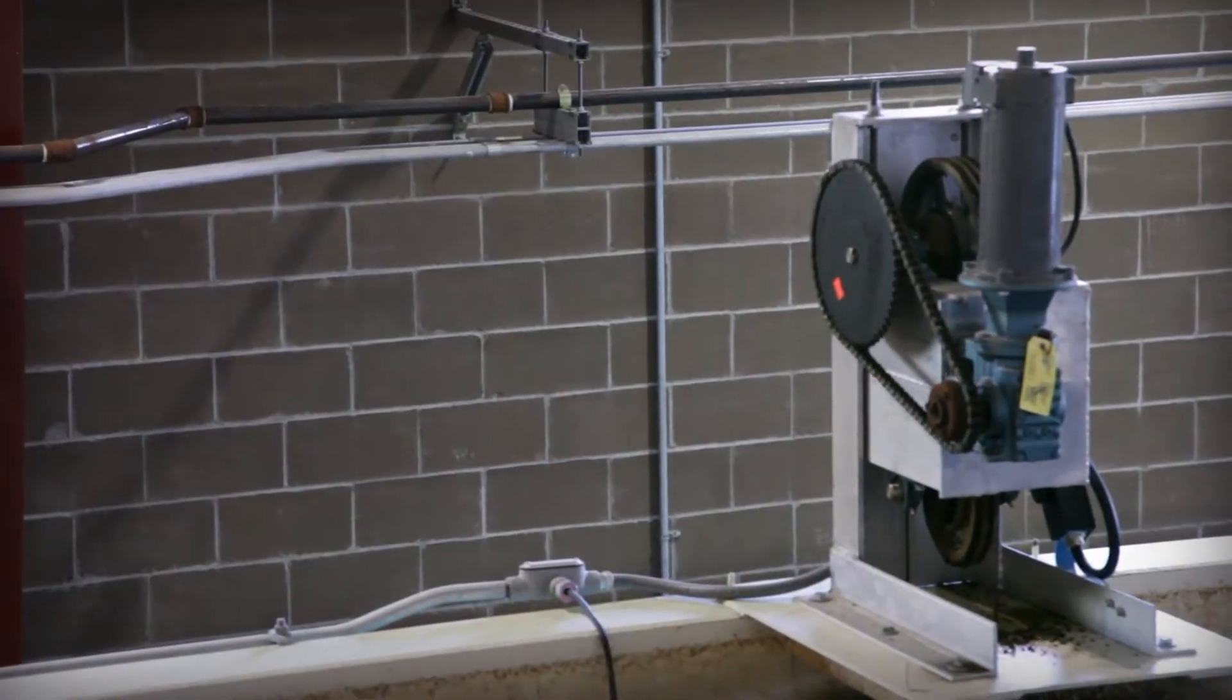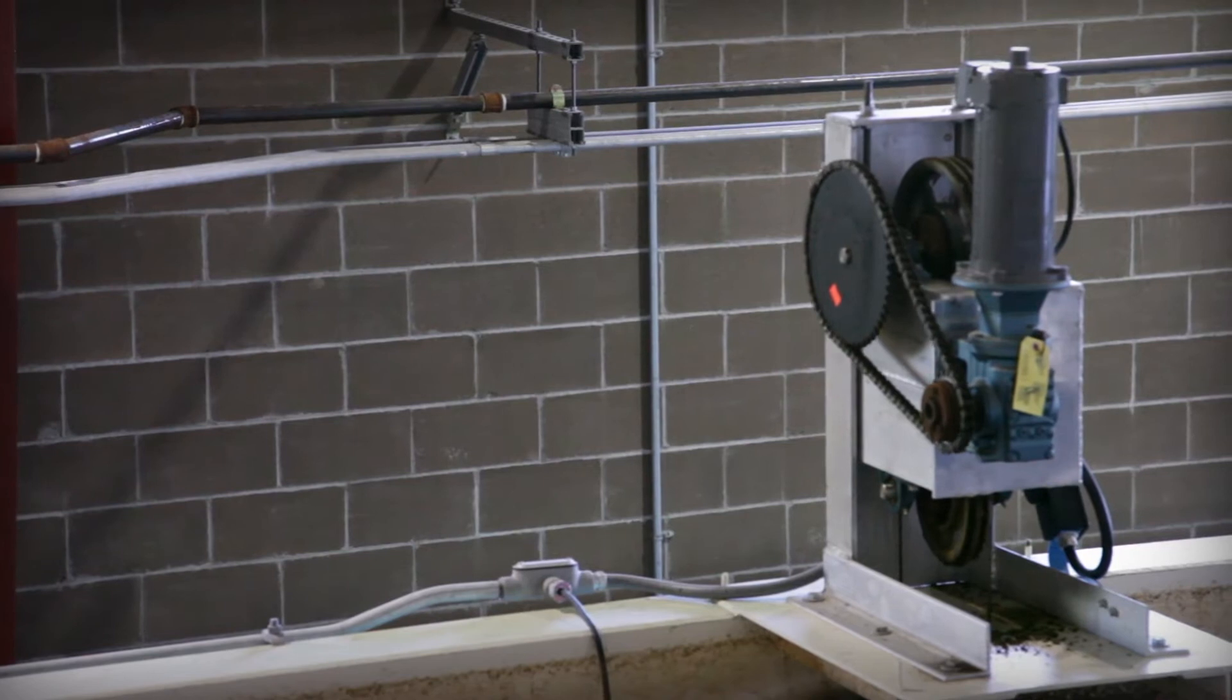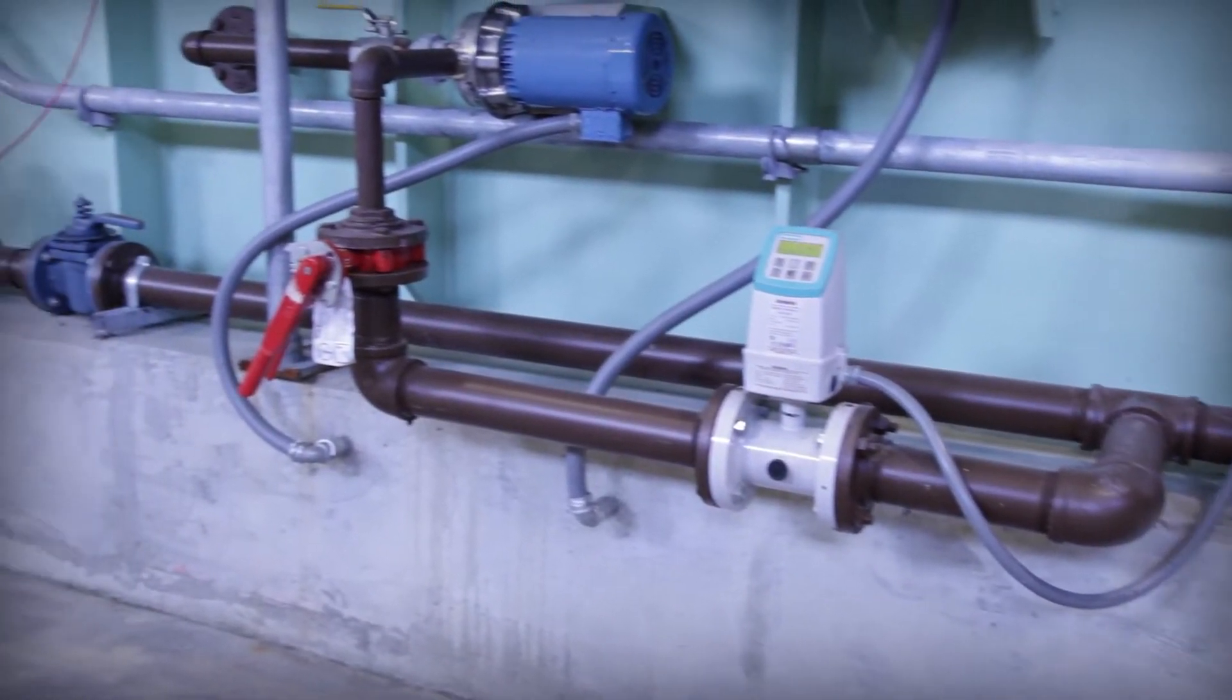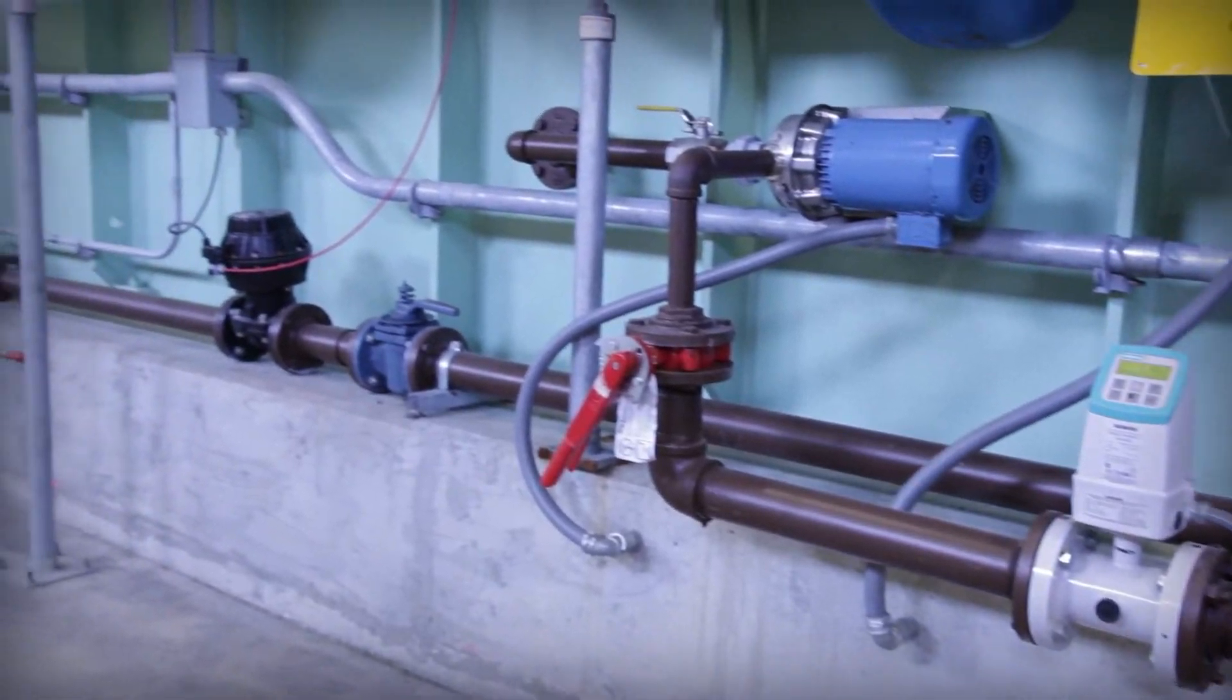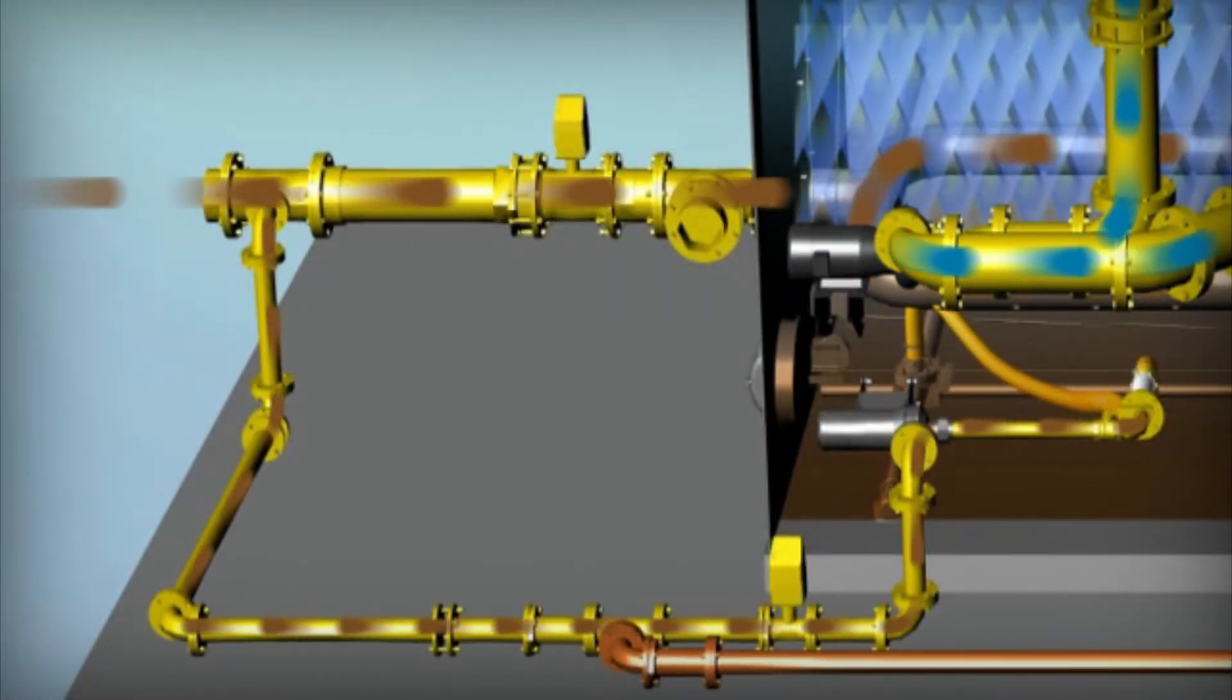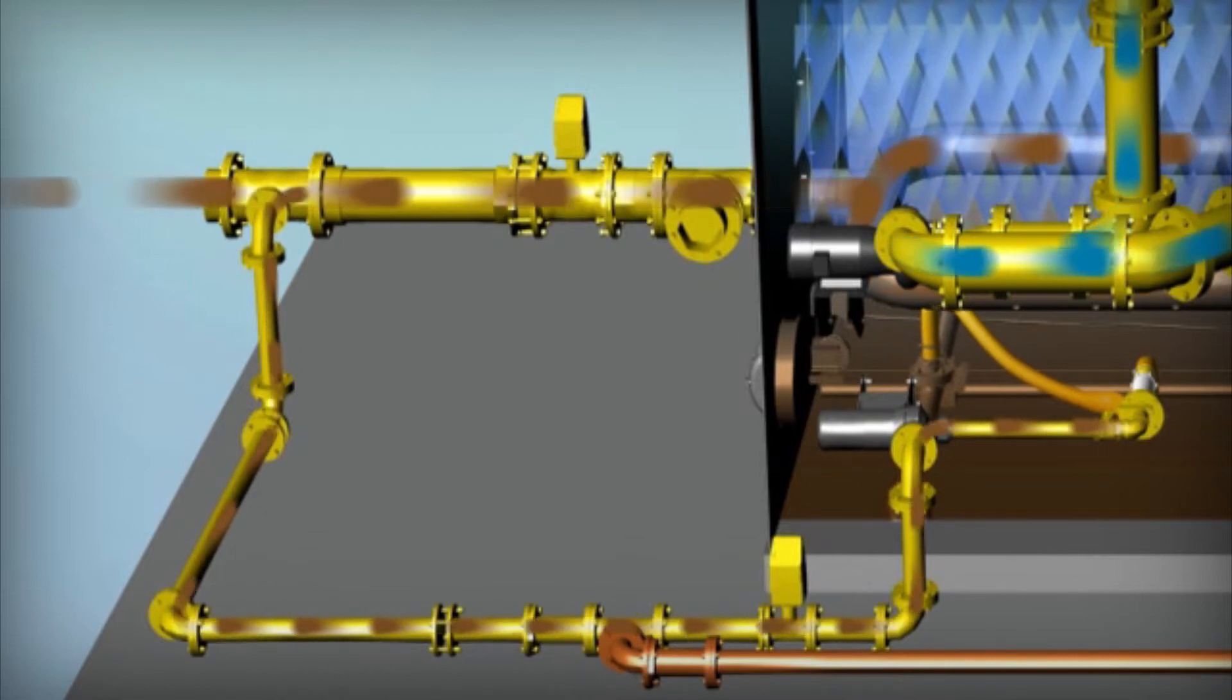Coagulant and polymer are added to the raw water to begin the flocculation process. A small amount of sludge is recirculated from the tube clarifier and mixed with the incoming raw water. This aids in rapid floc formation and dampens variations in the raw water.